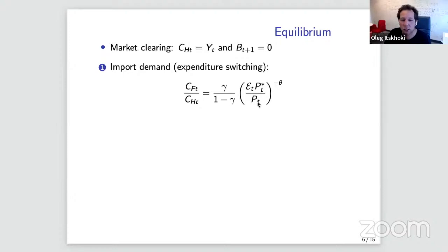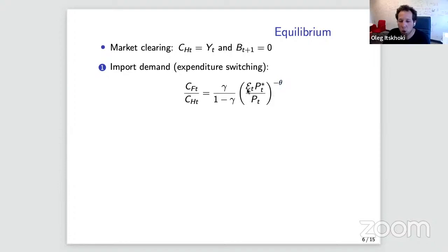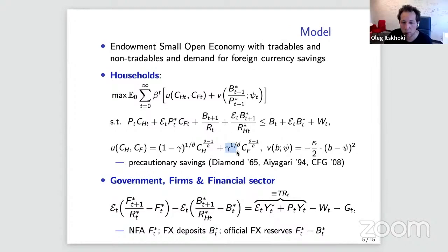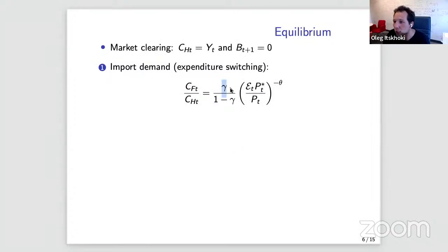The expenditure-switching condition: you choose between consuming imports and the domestic good, which must equal endowment in equilibrium, as a function of the relative price of the two. If imports become expensive relative to domestic goods, you shift away from imports. The elasticity of demand theta governs this. The exchange rate is needed to clear this goods market — import sanctions also target this market. Gamma is the weight on imports, reflecting that households have a lot of home bias but still consume a chunk of imports.